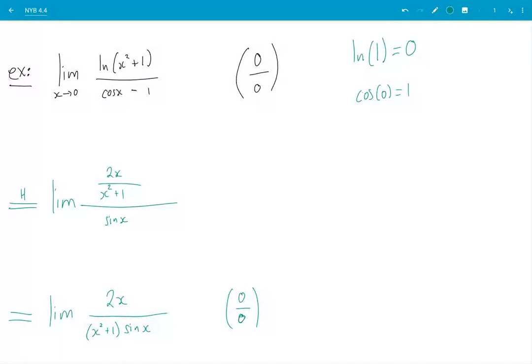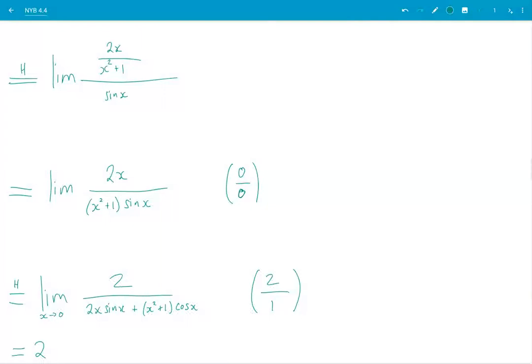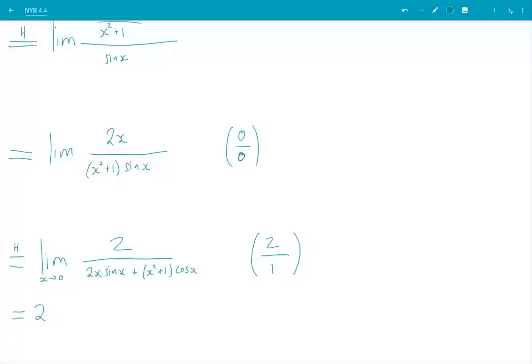Always take a step to simplify. Okay, if you have a kind of a fraction inside a fraction, that is, that's not good. You want to simplify. Otherwise, you have a big mess. So I take a step to simplify, and then I notice that I have 0 over 0 still. And I apply L'Hôpital again. It gets a bit messy in the bottom. I need a product rule.